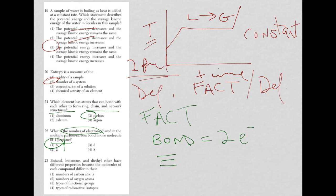Finally, for question 23, butanal, butanone, and diethyl ether have different properties because the molecules of each compound differ in. This is a skill. A-L ending means I'm dealing with an aldehyde, O-N-E I'm dealing with a ketone, and an ether. The endings are different because these are types of functional groups.